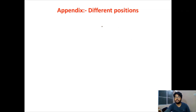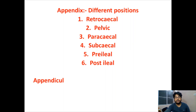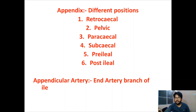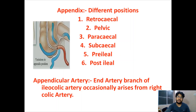The appendix has different positions: retrocecal, pelvic, paracecal, subcecal, preileal, and postileal. The appendicular artery is an end artery which is a branch of the ileocolic artery, and occasionally it may arise from the right colic artery.